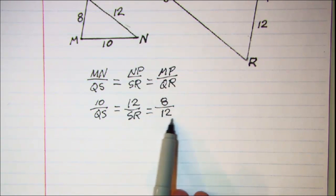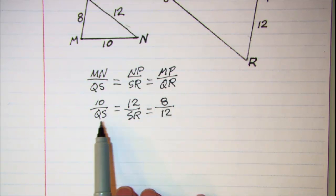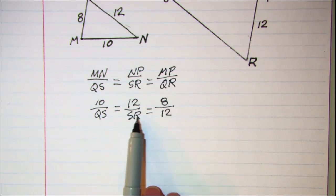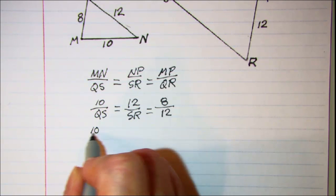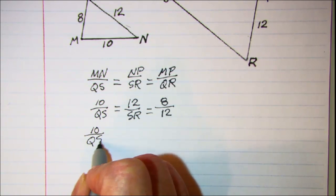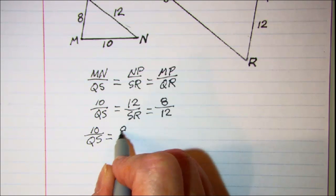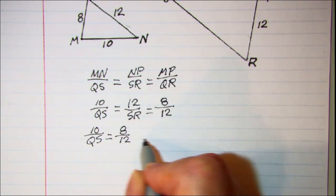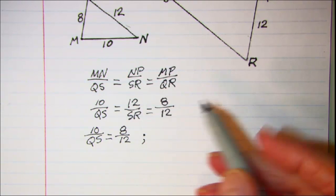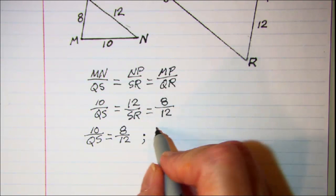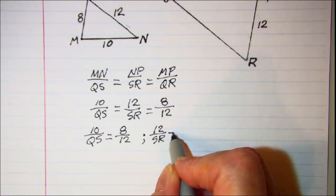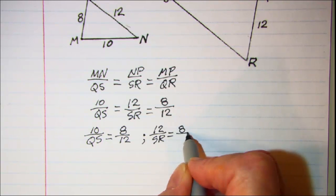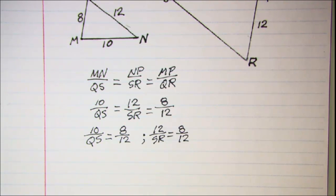So now we can use this ratio with each of the other two to solve for QS and SR. So let's go with 10 is to QS as 8 is to 12. That's one of my proportions, and then 12 is to SR as 8 is to 12 is my other proportion.